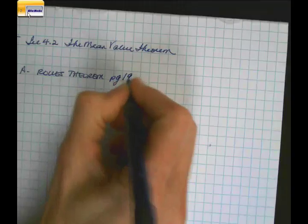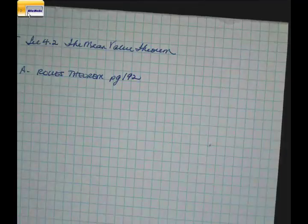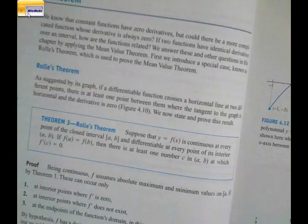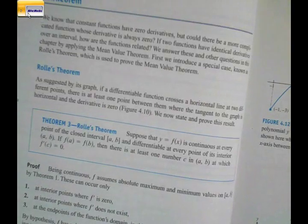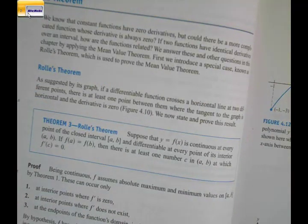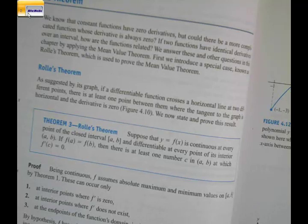This is on page 192. We're going to read it, and I'm going to ask you what you think it says — see if you can translate the theorem into English terms. It says: suppose that y equals f of x is continuous at every point in the interval and differentiable at every point. If f of a equals f of b, then there is at least one number c in the interval at which f prime is equal to 0.